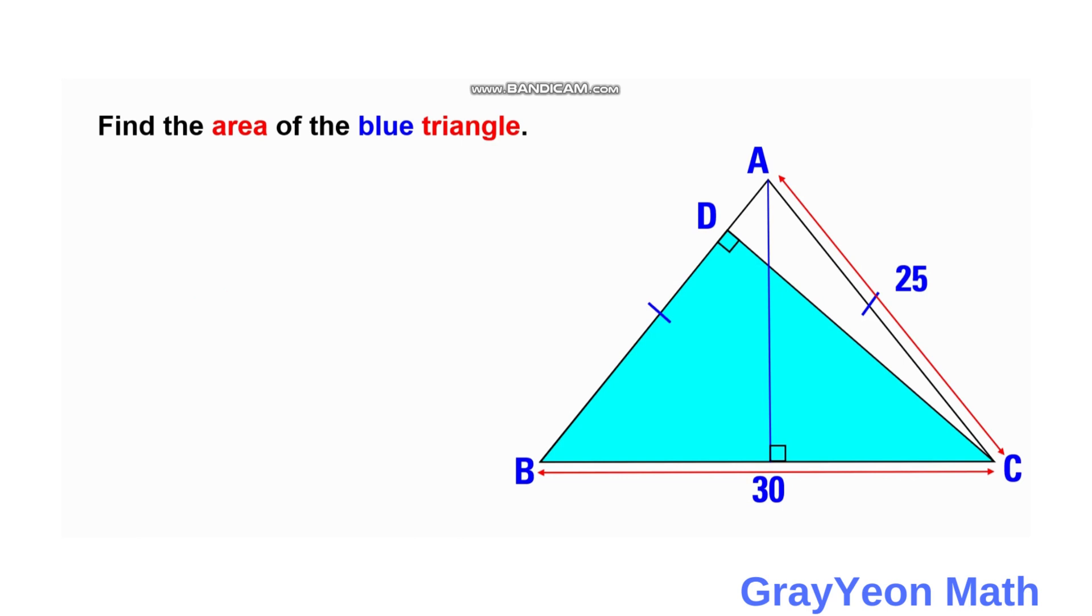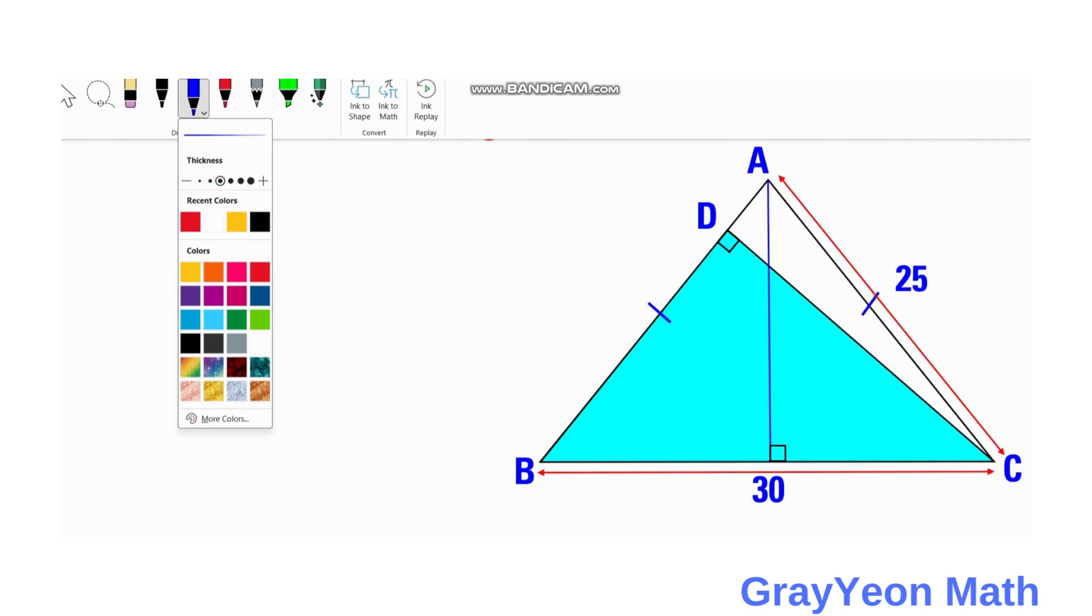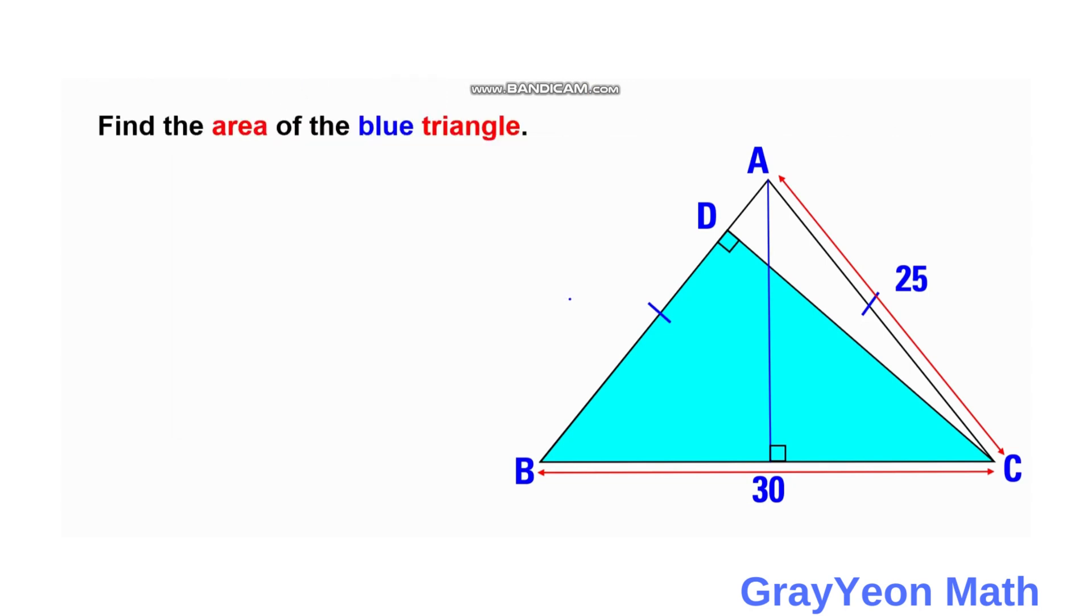First thing that we have to notice is that it is an isosceles triangle given, so if that is the case, then this length AB is actually 25 also. We label this BD as X, and this AD is 25 minus X.